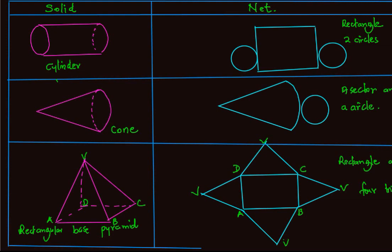For a cone, the net will be a sector of a circle and a circle to represent its base.